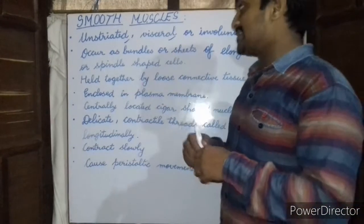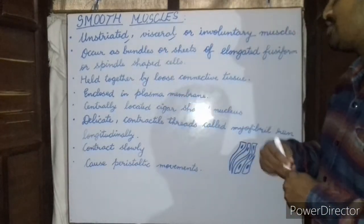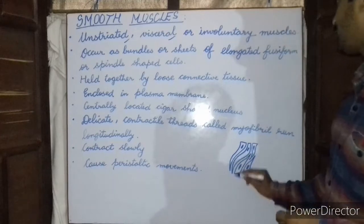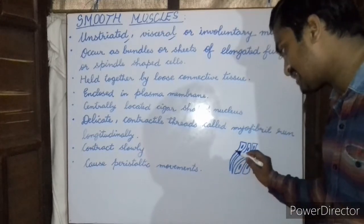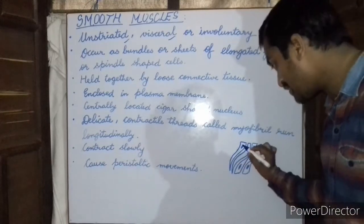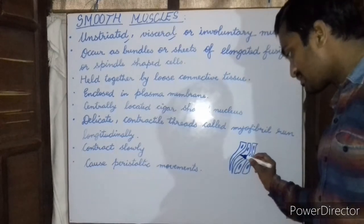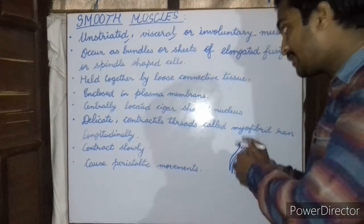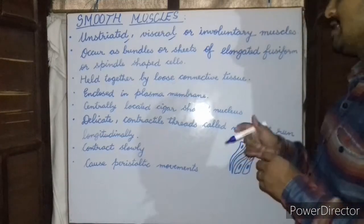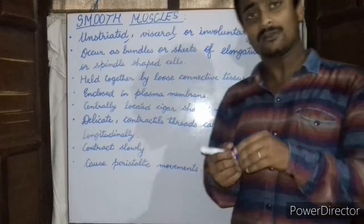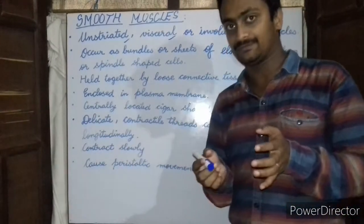These smooth muscles occur as bundles or sheets of elongated fusiform or spindle-shaped cells. These cells are held together by a loose connective tissue and are also enclosed in a plasma membrane.